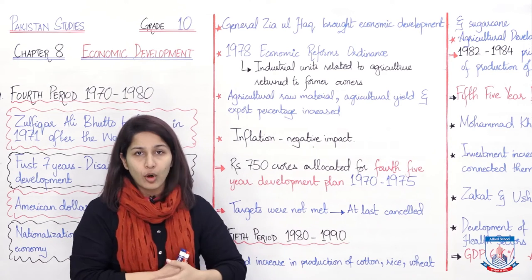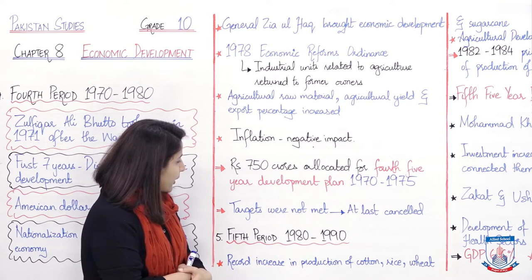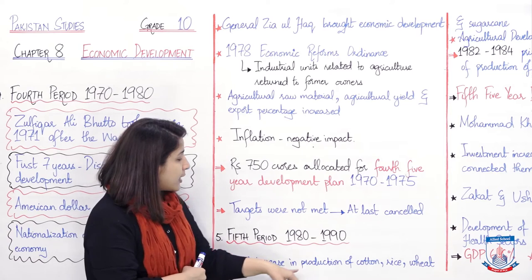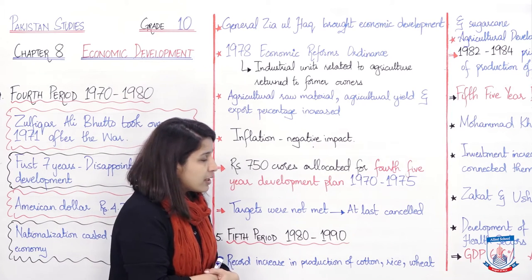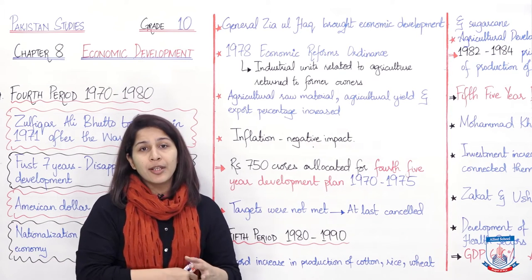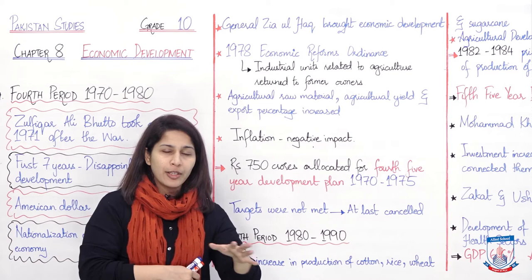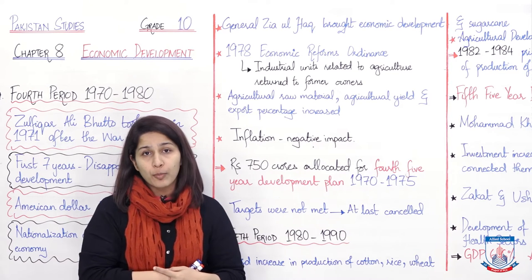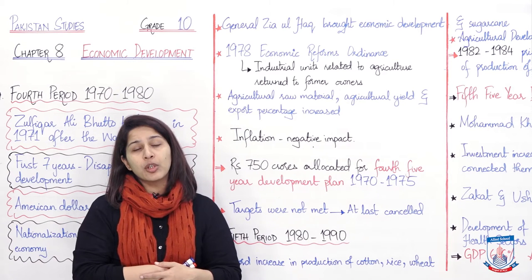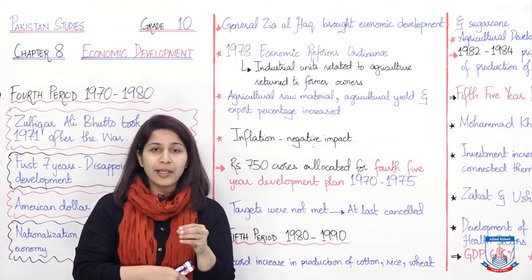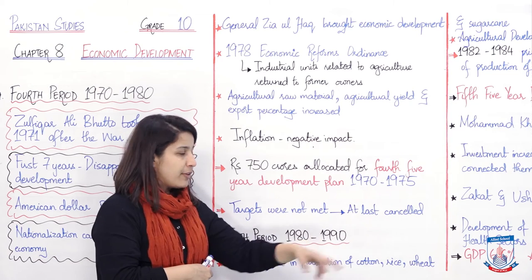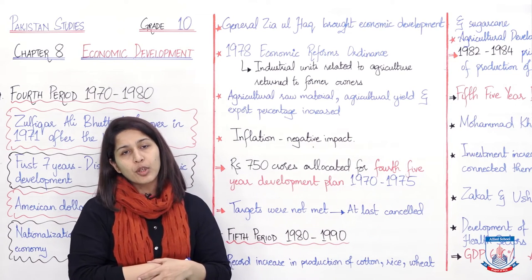Now let's move to the fifth period, from 1980 to 1990. This was the decade that saw record increases in production of cotton, rice, wheat, and sugarcane — the highest increase over all previous years in these raw materials and agricultural crops.